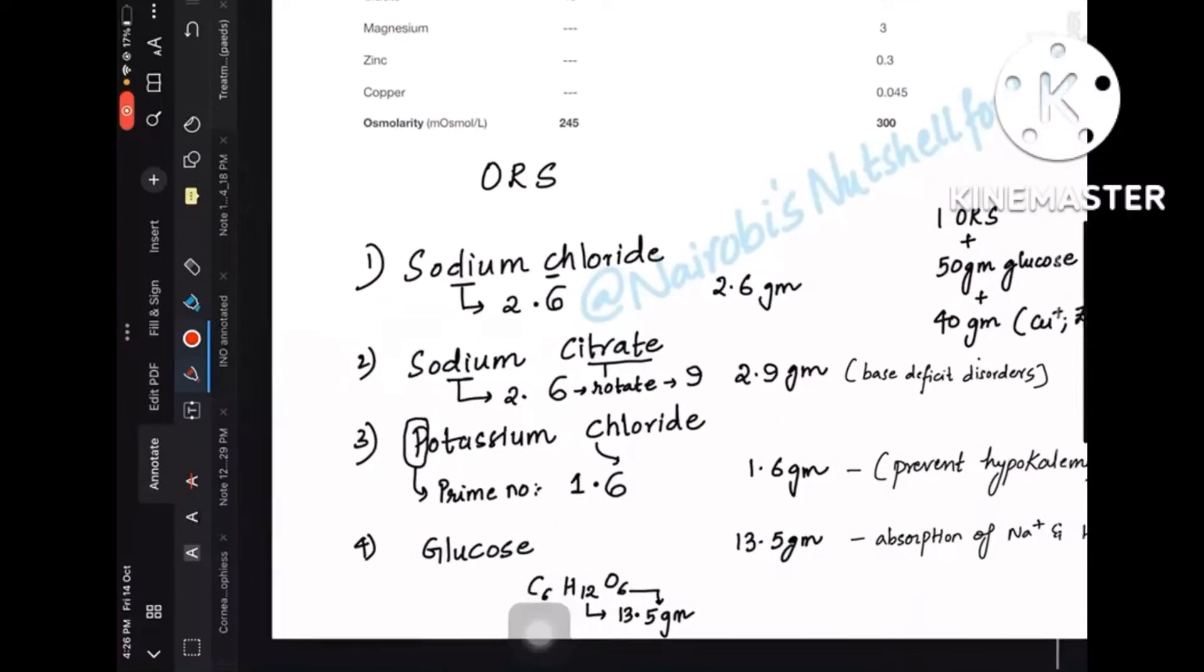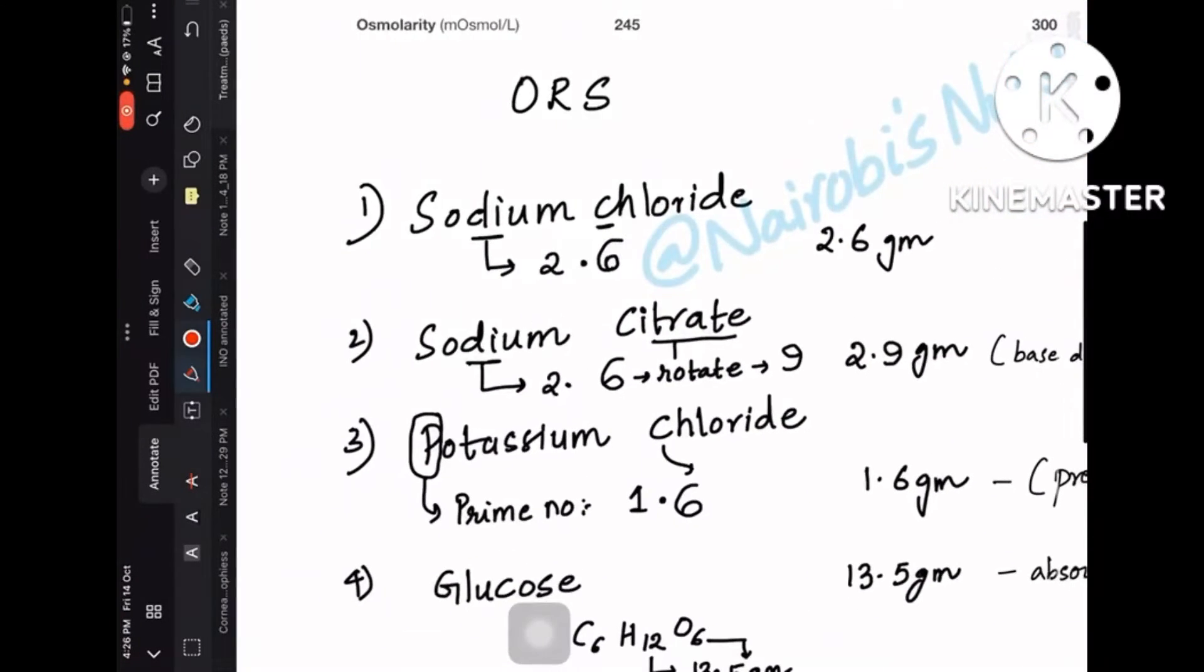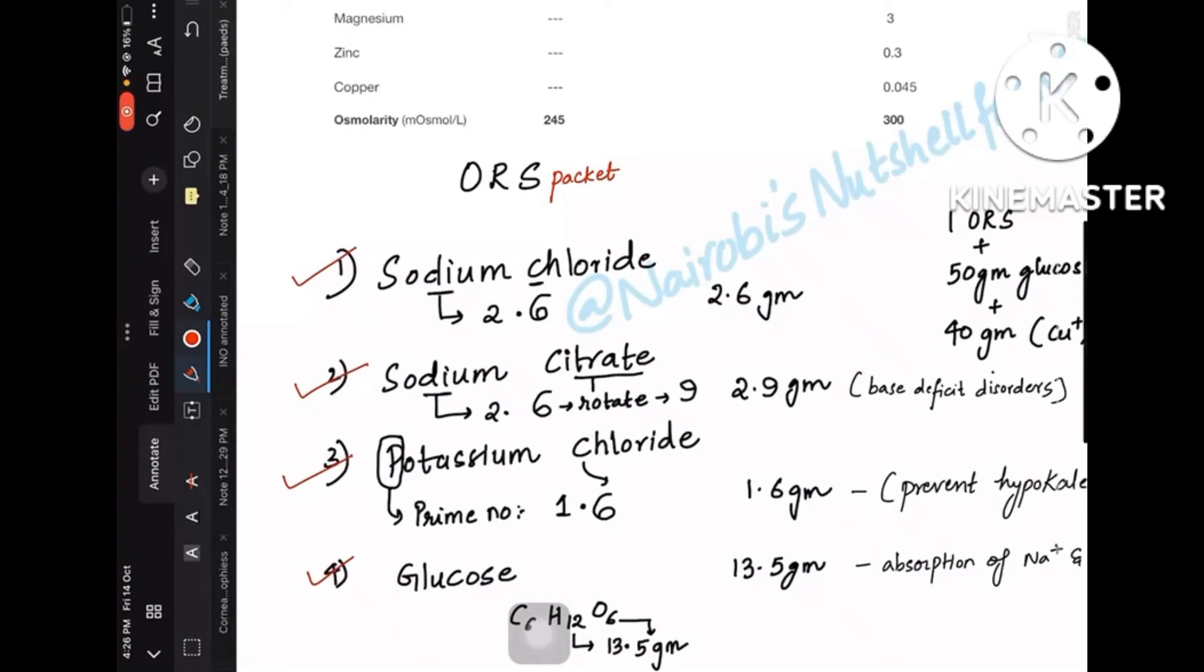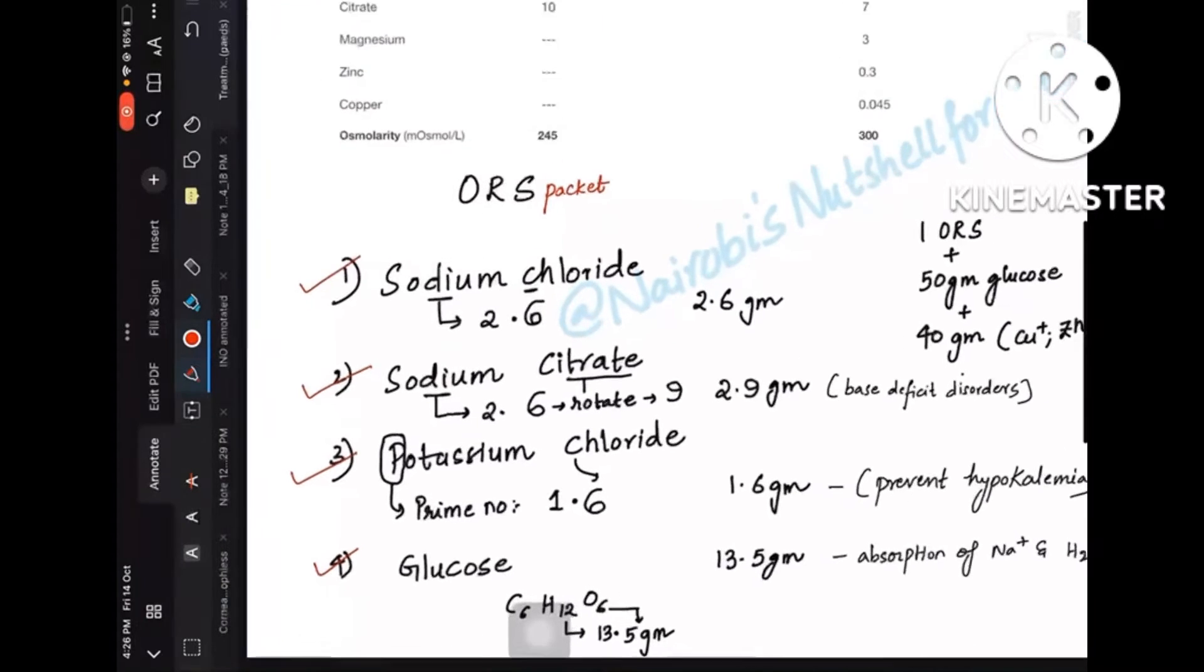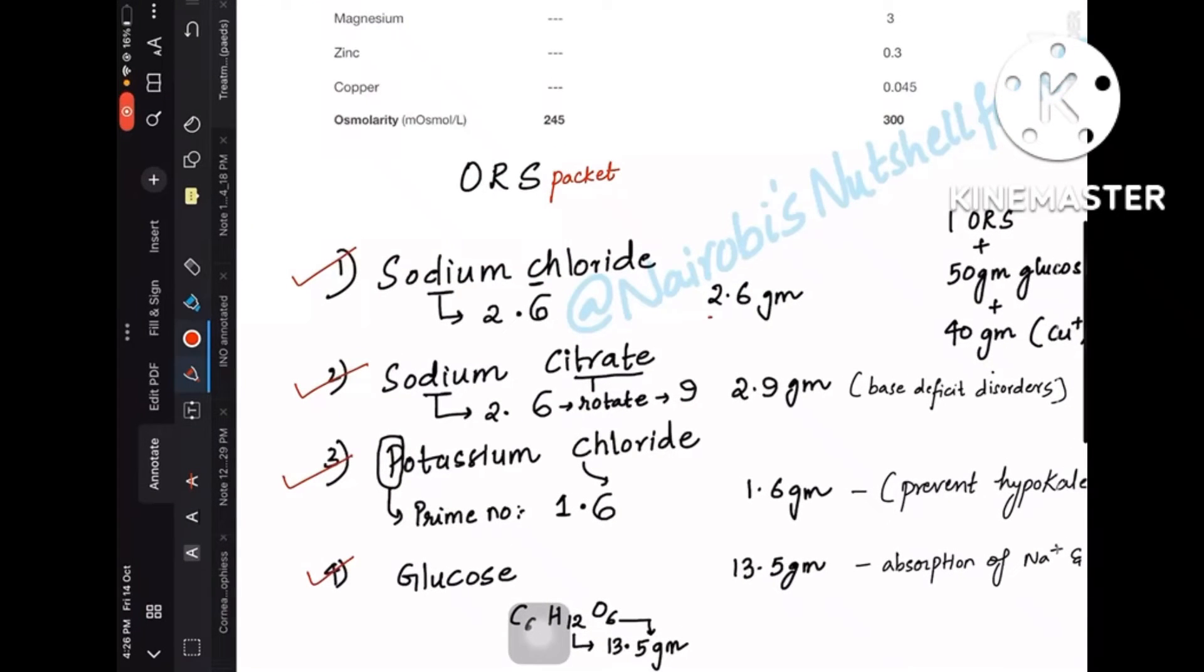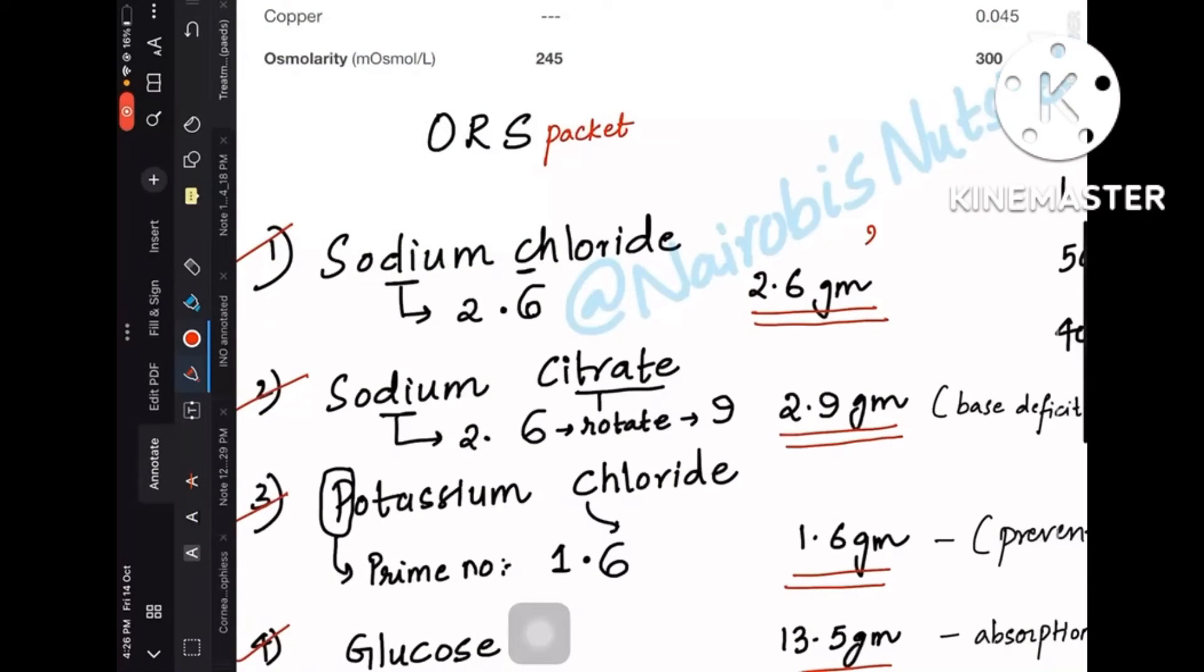Firstly, let's know what an ORS packet constitutes. In one packet of ORS you have sodium chloride, sodium citrate, potassium chloride, and glucose. They are provided in grams: sodium chloride is 2.6 grams, sodium citrate is 2.9 grams.